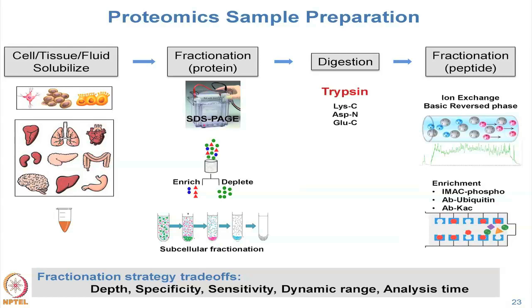The first thing we do in proteogenomics is digest into peptides, and then it is all about separation of peptides after that. Fractionation at the protein level is usually for pursuing a particular subset — for example, in plasma the most abundant protein is albumin, which is the least interesting, so you use a depletion step to remove it before going to peptides. For cancer proteogenomics, we take tissue, grind it up, go to peptides, and then fractionate peptides.